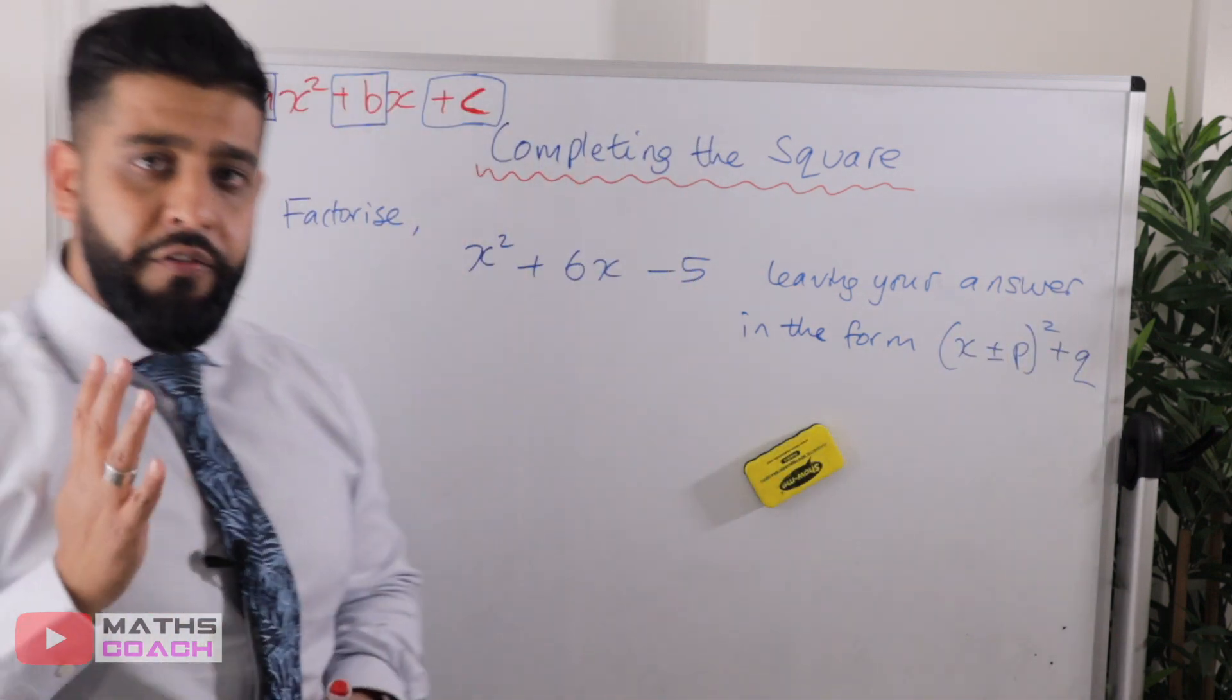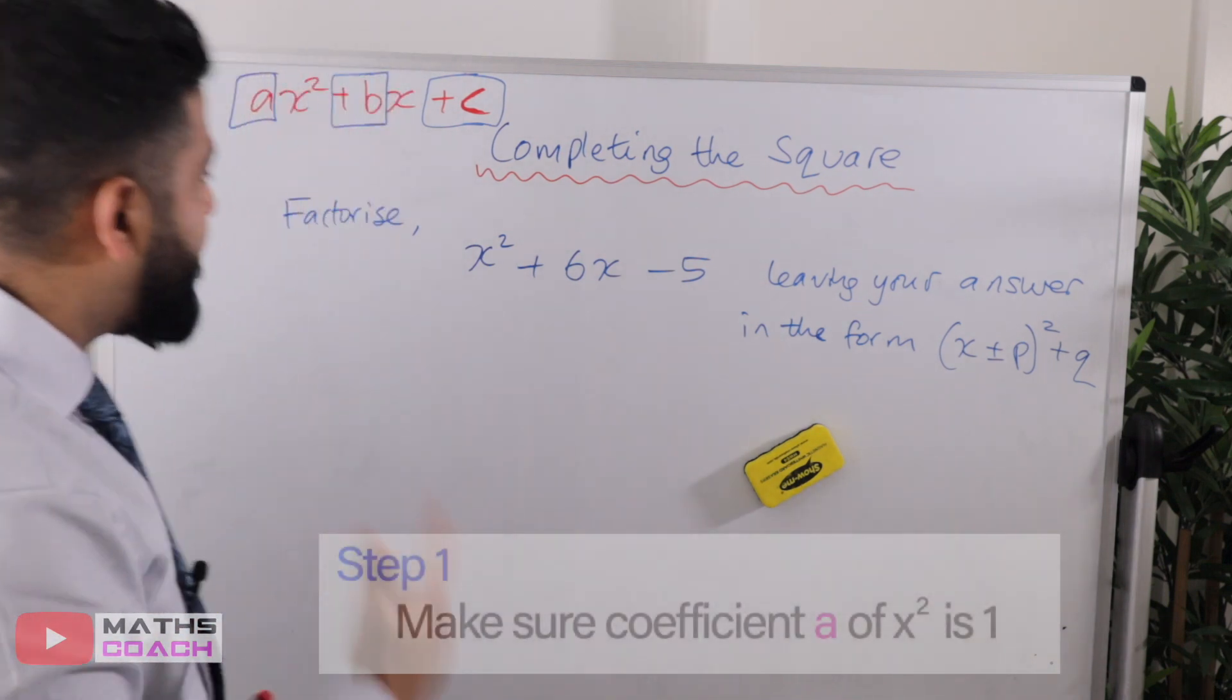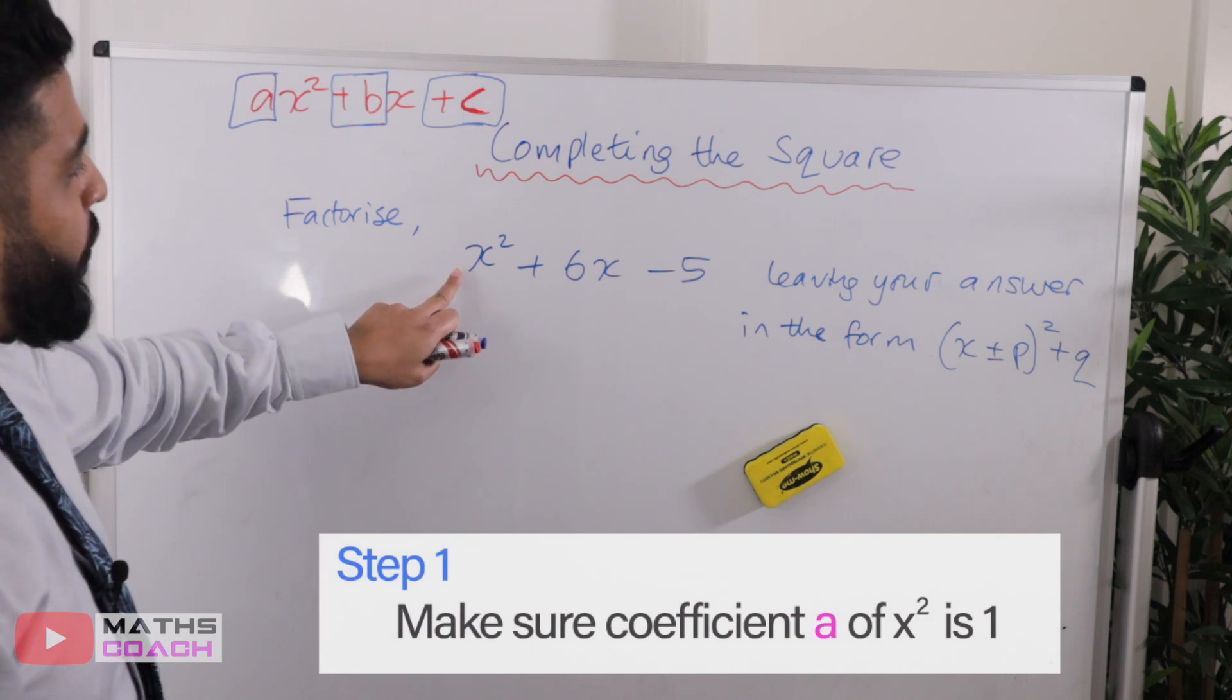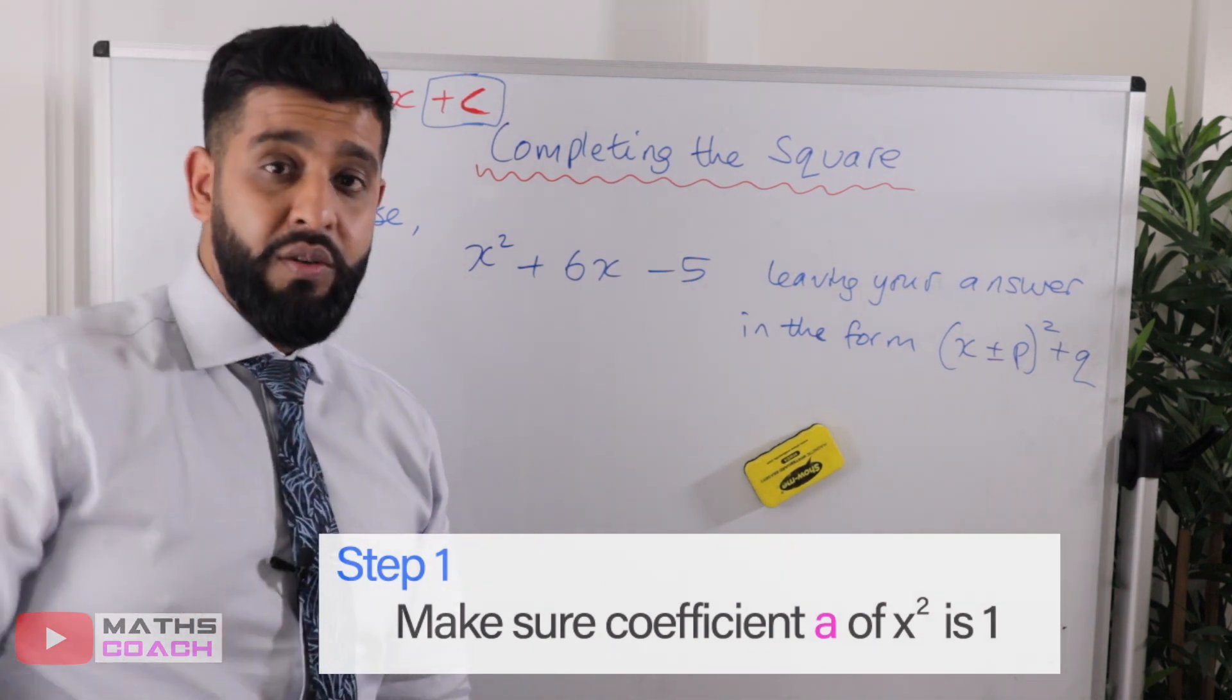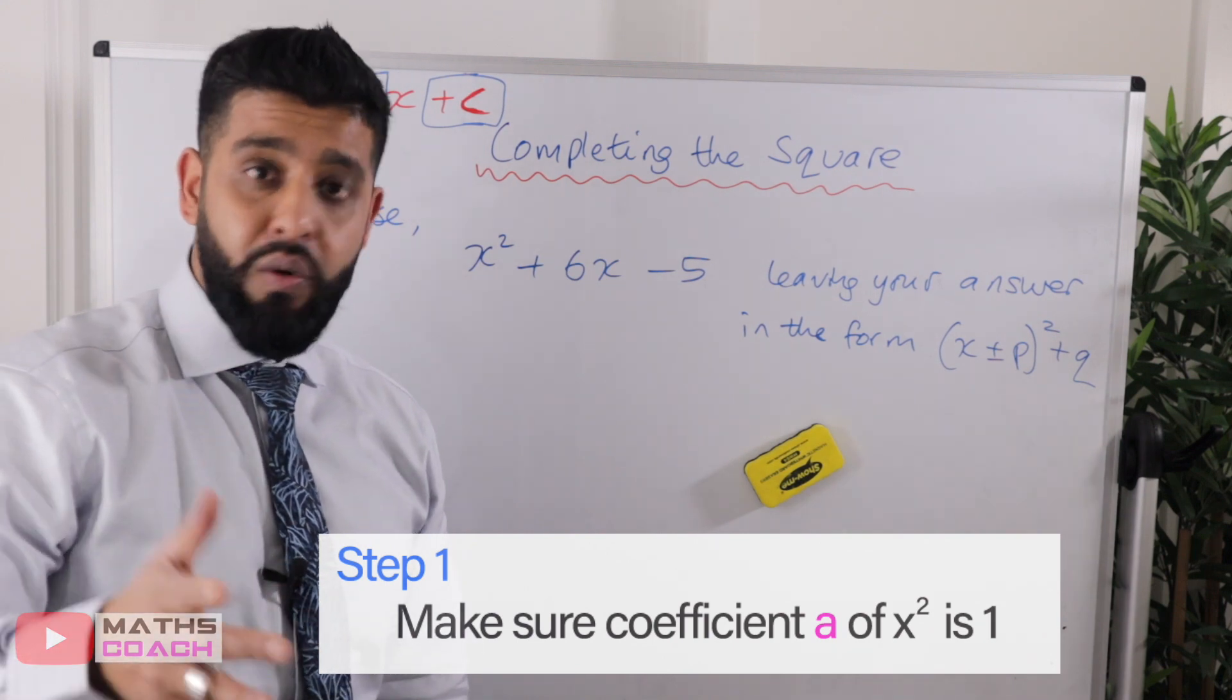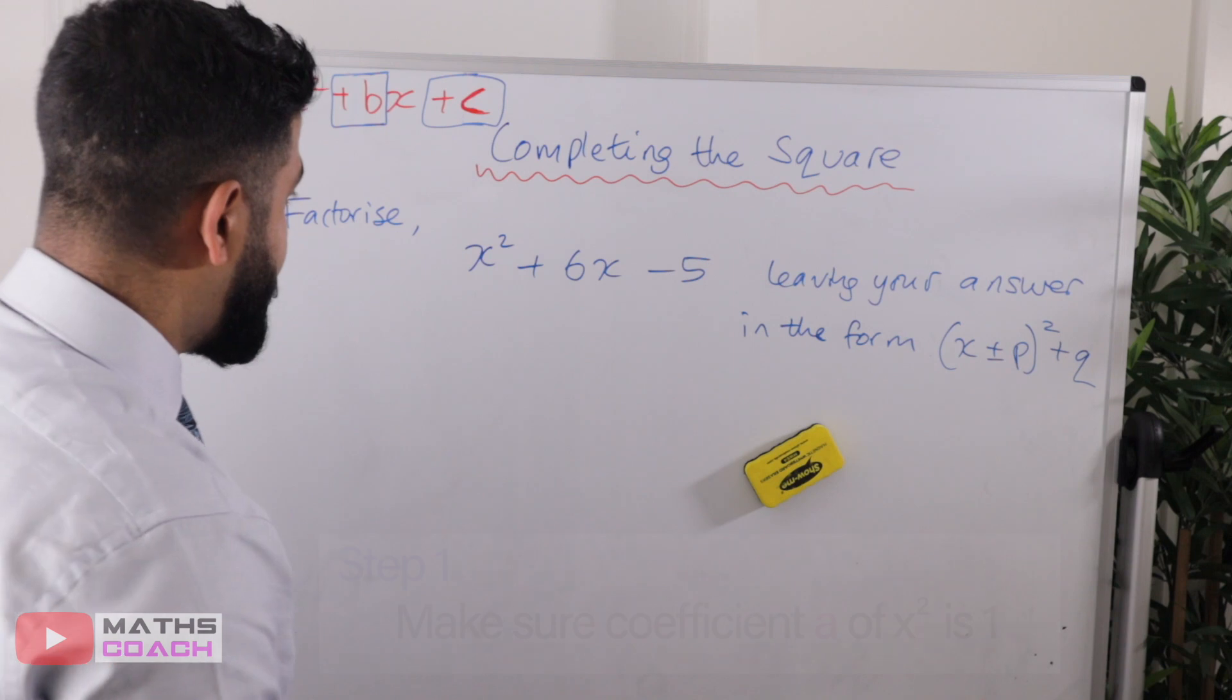Now there are three simple steps that I recommend that you use. Step number one, make sure that the coefficient of x² is one. If it's other than one, deal with it. How? Divide, factorise that number out, and I'll show you that later on.